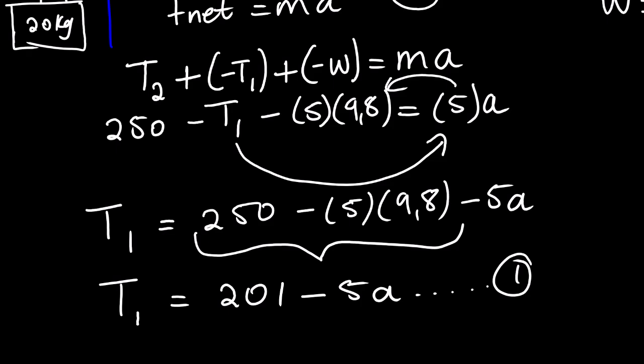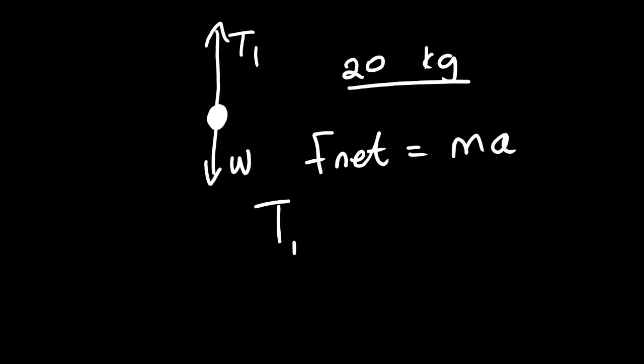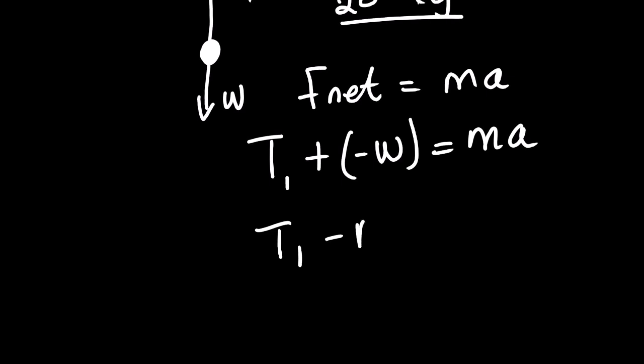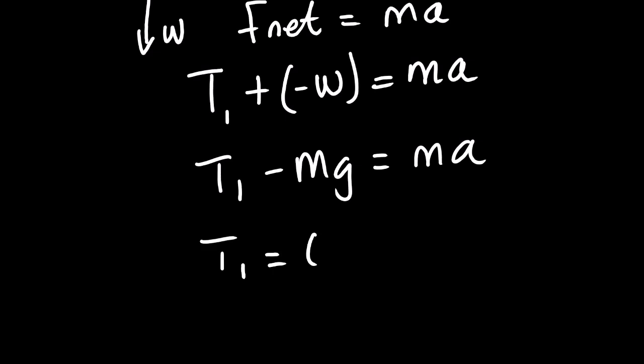Now we need to proceed and generate equation number 2 from the 20 kg block. For the 20 kg block, we have two forces acting on it. So we need to start with F net equals to MA. Now how many forces are acting on it? We have two forces. Now T1 will be positive since it's facing up, plus negative weight. And then it's MA. Now we have T1 minus MG is equals to MA. And then T1 minus 20 kg multiplied by 9.8 equals 20 multiplied by A.